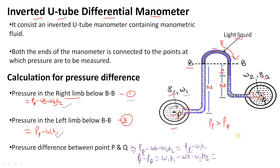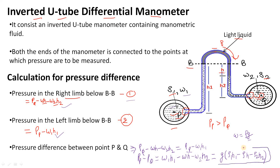Now substituting W equals rho·G, and since G is the same for every liquid, we can factor it out. The pressure difference becomes: PP minus PQ equals G times (rho1·H1 minus rho·H minus rho2·H2). This is our pressure difference between points P and Q.